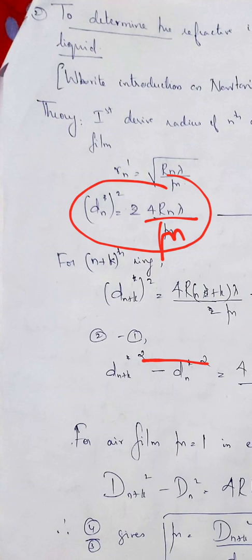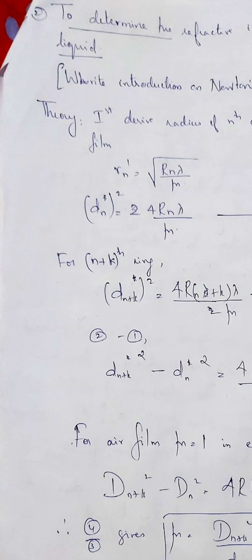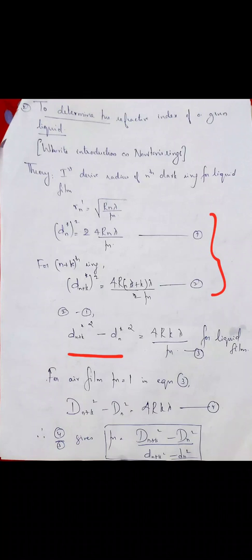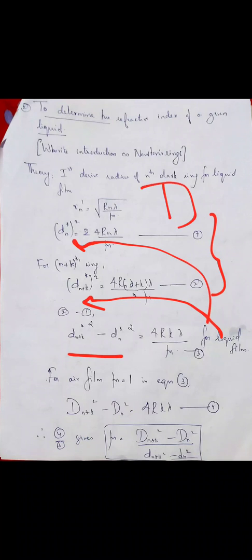Next, we find the diameter squared of the (n+k)th ring: D_(n+k)² = 4R(n+k)λ/μ. Subtracting, we get: d_(n+k)² − d_n² = 4Rkλ/μ for the liquid film. Here I use lowercase d for the diameters of rings obtained with the liquid film, and capital D for diameters obtained with the air film, since both measurements will be different. For the air film, the same equation holds but with μ = 1: D_(n+k)² − D_n² = 4Rkλ.